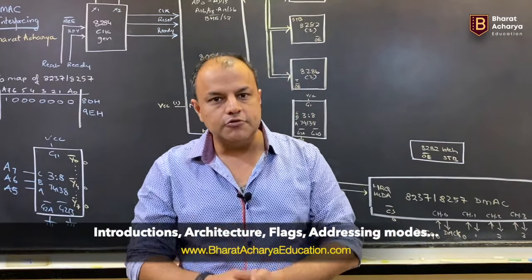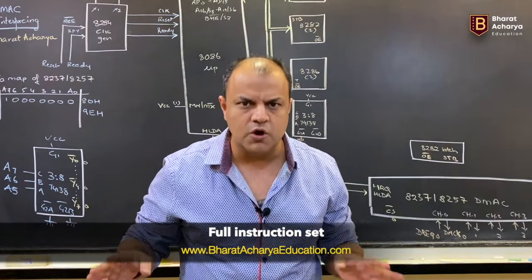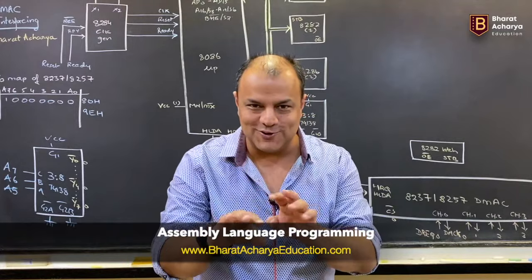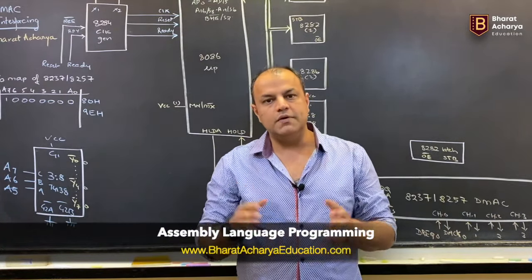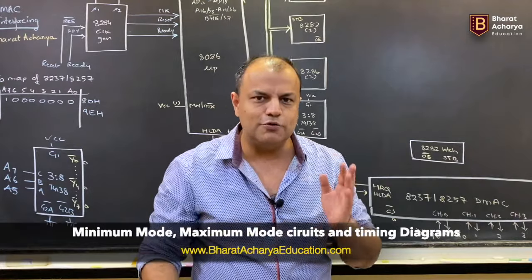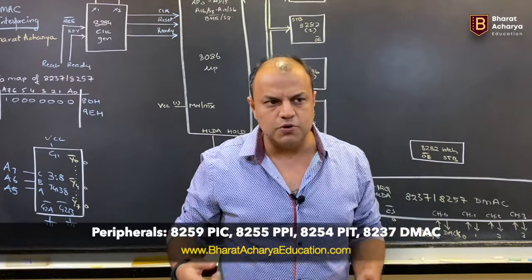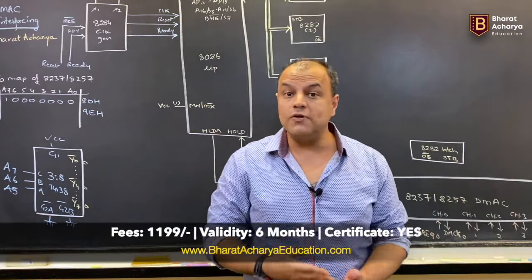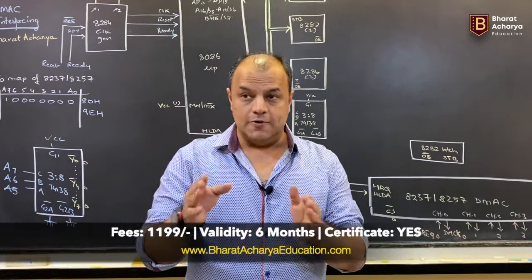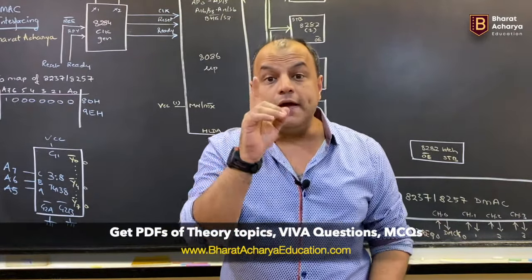We cover everything right from the beginning: introduction, segmentation, banking, architecture, flags, addressing modes, and the entire instruction set — about 7 videos on the instruction set. There are about 10 videos on programming, where I do programming on the board and on the computer using a simulator for your college practicals. Then we have the full theory of 8086: minimum mode, maximum mode, circuit diagrams, timing diagrams, and all the peripherals — 8259, 8255, 8254, and 8237 DMA controller. Interfacing of the 8237 is a topic many universities didn't touch earlier, but syllabi keep changing and getting more advanced, and I saw many requests for this interface — that's the reason I pushed in this video.